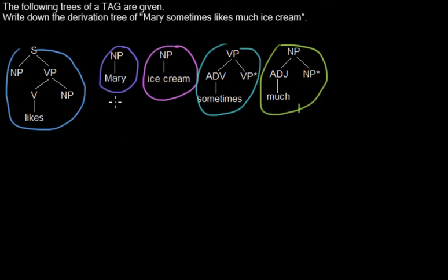Also, we are having a lexicalized tree adjoining grammar. That means in every tree we have one terminal leaf, and that is what gives the name to the whole tree. So this tree is the tree 'likes'.